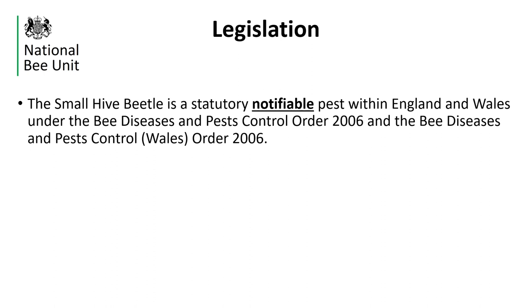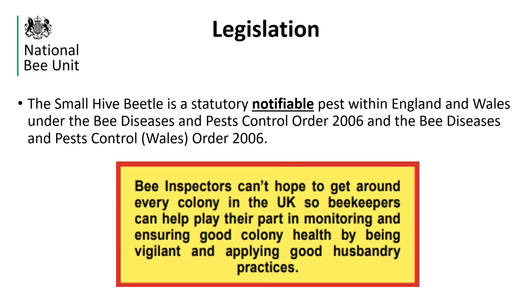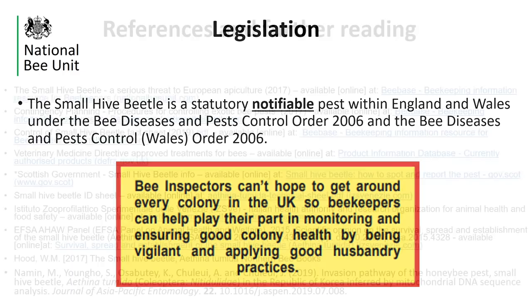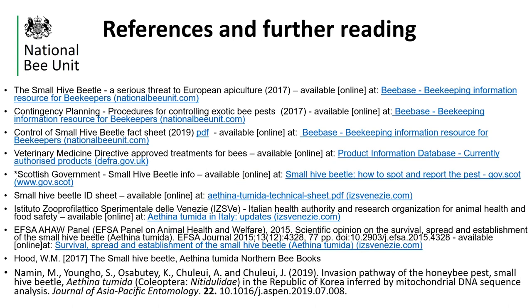Small Hive Beetle is a serious threat to honeybees, bumblebees and other bee species. Small Hive Beetles can infest and destroy colonies, honey products, and devastate beekeeping, impacting the environment, agriculture and prosperity of the UK, which is why it is a statutory notifiable pest in the UK. The most important thing a beekeeper could do to help protect the UK from this exotic threat is to remain vigilant and register on BeeBase. Thank you for watching this National Bee Unit presentation on Small Hive Beetle. Further information can be found in the links provided.